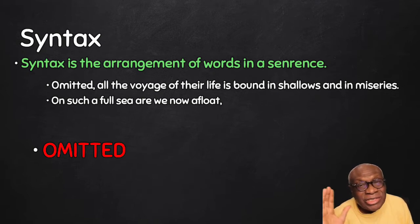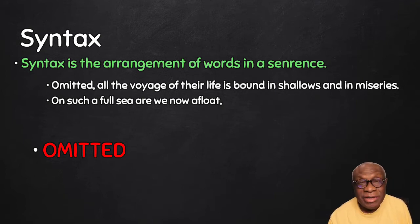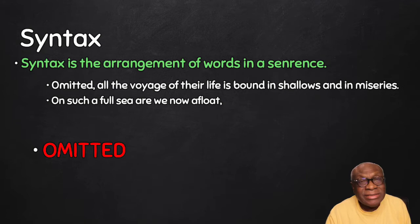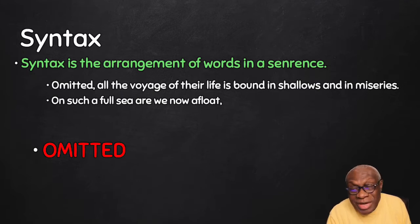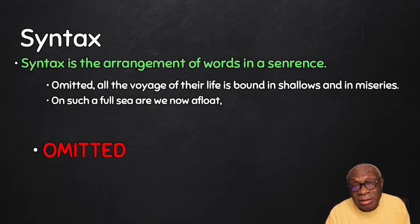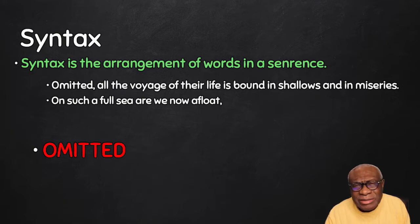But Shakespeare's syntax is such that 'omitted' is brought to the beginning of the sentence, placing it in a position of prominence so that we notice it. This means Shakespeare wants us to see that 'omitted' is very important — because if we omit the opportunity, life is bound in shallows and in miseries and we lose our ventures. Shakespeare wants us to focus on what will happen if the opportunity is omitted.